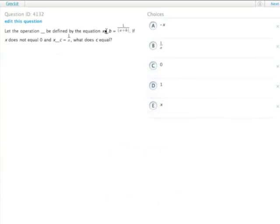So we have this operation of the underlining where we take the first number and then the second number. That equals 1 over the two numbers added together.